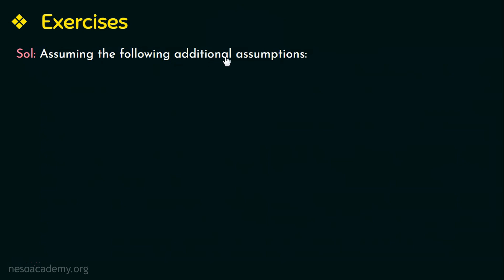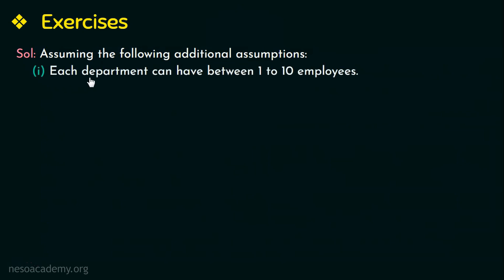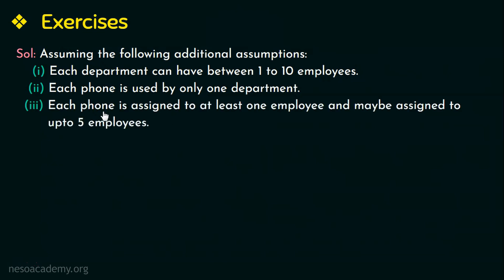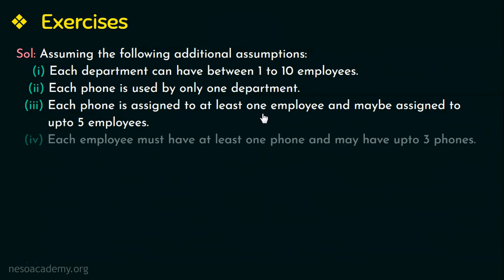Assuming the following additional assumptions: the first one is each department can have between 1 to 10 employees — these numbers are up to you to assume. The next assumption is each phone is used by only one department. The third one is each phone is assigned to at least one employee and may be assigned to up to five employees. The last assumption is each employee must have at least one phone and may have up to three phones.